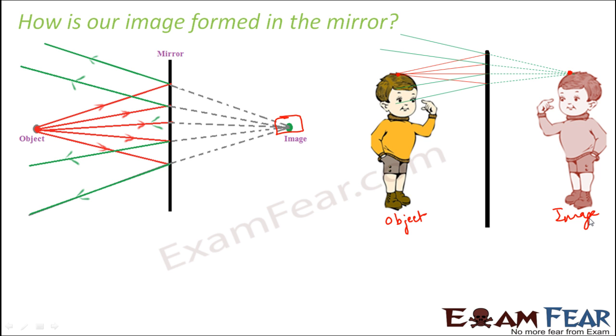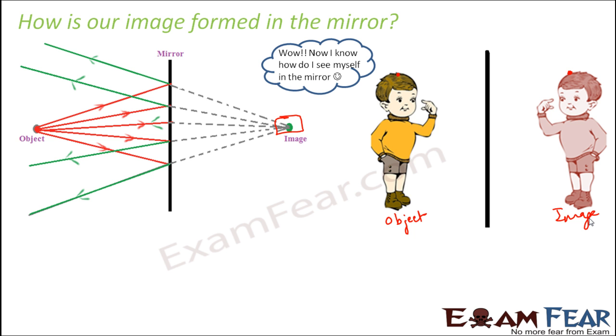Likewise, image is formed for each and every point on our body, which results in the formation of this complete image. That's how image formation takes place in a plane mirror. I hope that you must be glad now that you know how you see yourself in the mirror - it is not magic, it is just simple science.